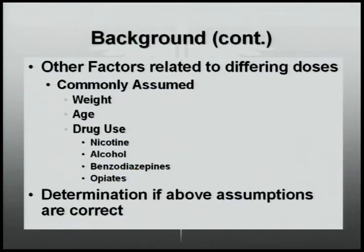Not only does the type of procedure affect the amount of medication given, but there are also many other commonly assumed factors. This includes weight, age, and if they are taking any of the following drugs: nicotine, alcohol, benzodiazepines, or opiates. The main goal of this experiment is to determine if any of the above assumptions are true.